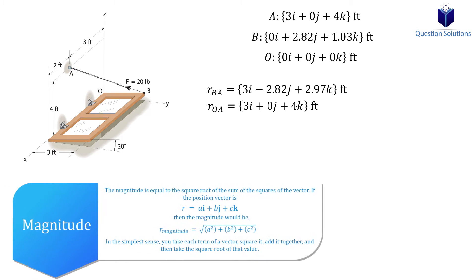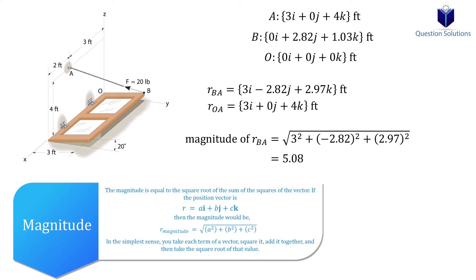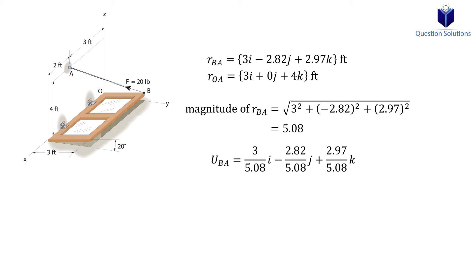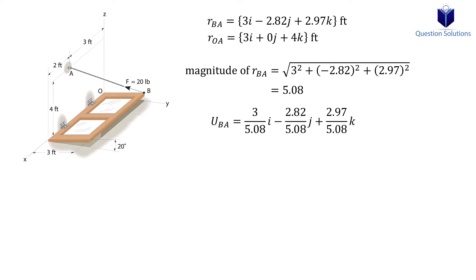Now let's find the magnitude of the position vector BA. Using our magnitude, we can write a unit vector like this. If this part seems confusing or you're wondering why we do this, please check out the video on expressing forces in cartesian form. It's very important as most questions will use the exact same method over and over again.